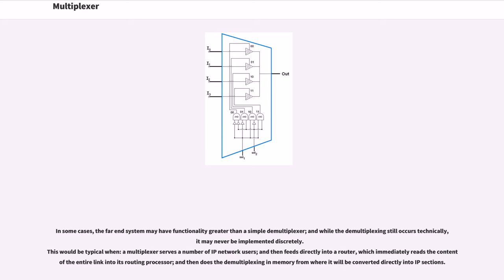This would be typical when a multiplexer serves a number of IP network users and then feeds directly into a router, which immediately reads the content off the entire link into its routing processor, and then does the demultiplexing in memory from where it will be converted directly into IP sections.